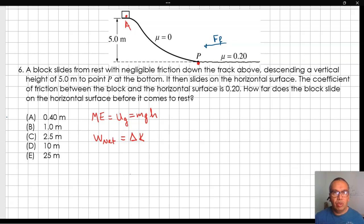Only the friction is doing work. Therefore, we have negative friction times displacement is equal to final kinetic energy minus initial kinetic energy. The final kinetic energy is zero because the block comes to rest. The initial kinetic energy is equal to the gravitational potential energy at point A.